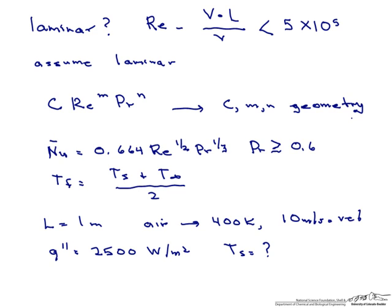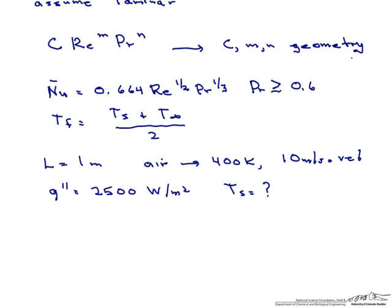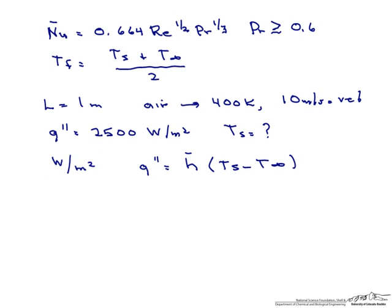First of all, why do we use the heat flux rather than the heat transfer rate? We don't know the cross-sectional area, so we have to present this in watts per meter squared. So our governing equation is that the heat flux equals the average heat transfer coefficient times Ts minus T infinity. So we know the heat flux. We know T infinity. We're trying to find that surface temperature. And therefore, what we need is a correlation for H.